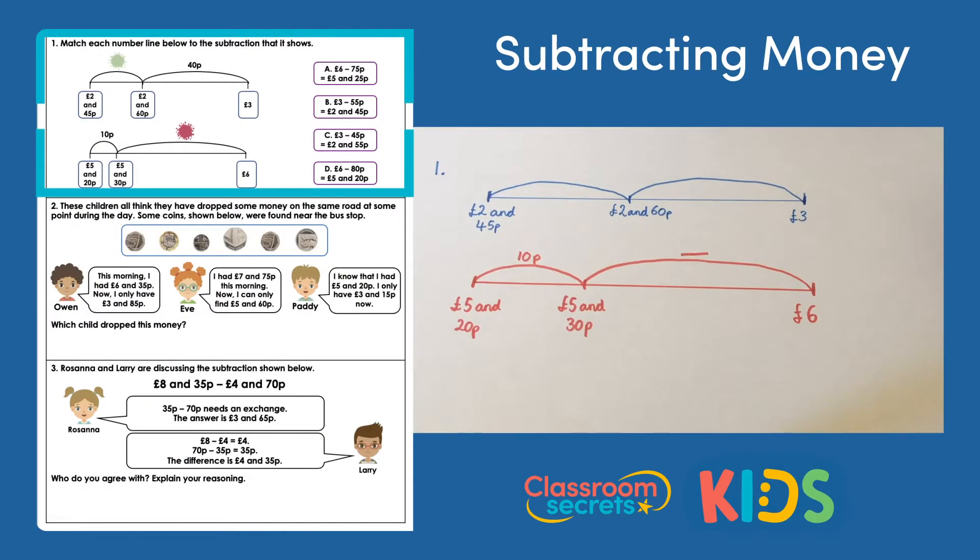So let's look at question one. It says match each of these number lines to one of the subtractions A, B, C, or D. Looking at the blue one first, we can see three pounds at the right-hand side, so we're taking away from three pounds. Looking at your subtractions, we only have B or C with three pounds. Something's been taken away from three pounds and it can only be B or C.